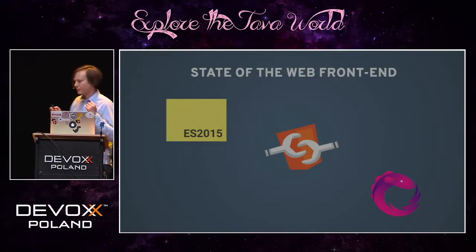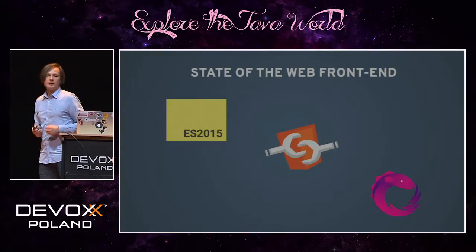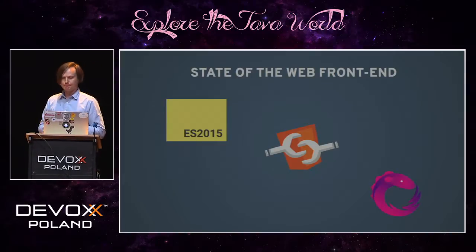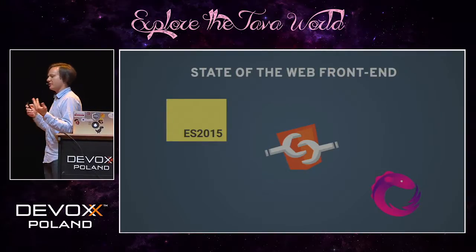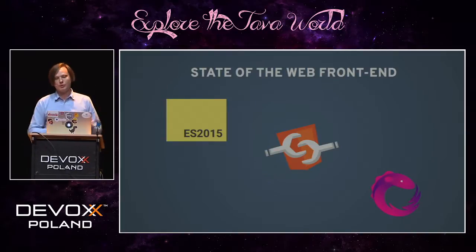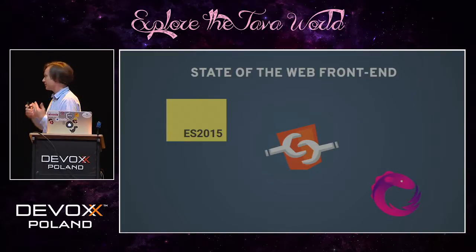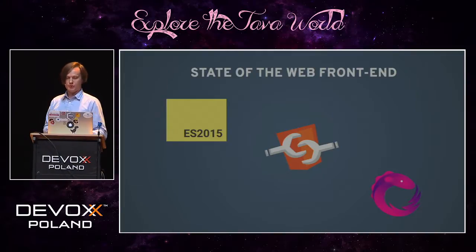So, what do we have? We have new standards on the one hand, and Angular on the other hand. To follow all these standards, it was impossible to just implement slight changes for Angular 1. That's why the Angular team decided to rewrite everything from scratch, and they came up with Angular version 2.